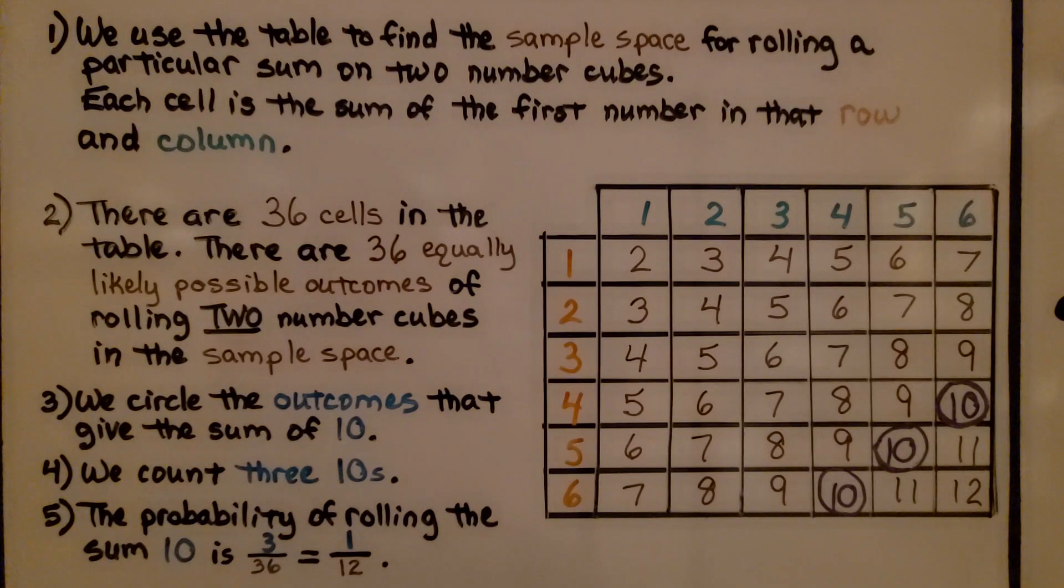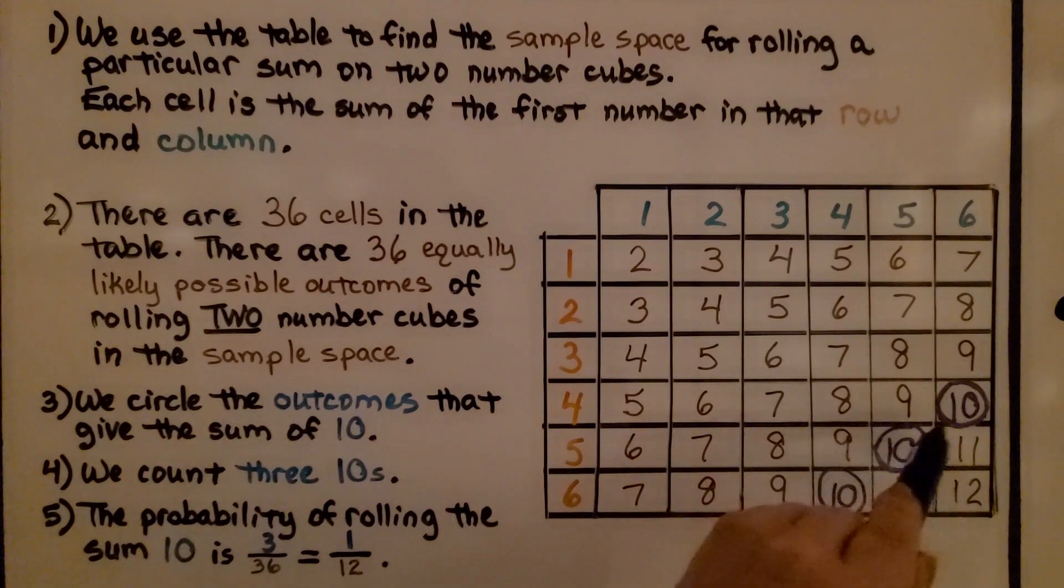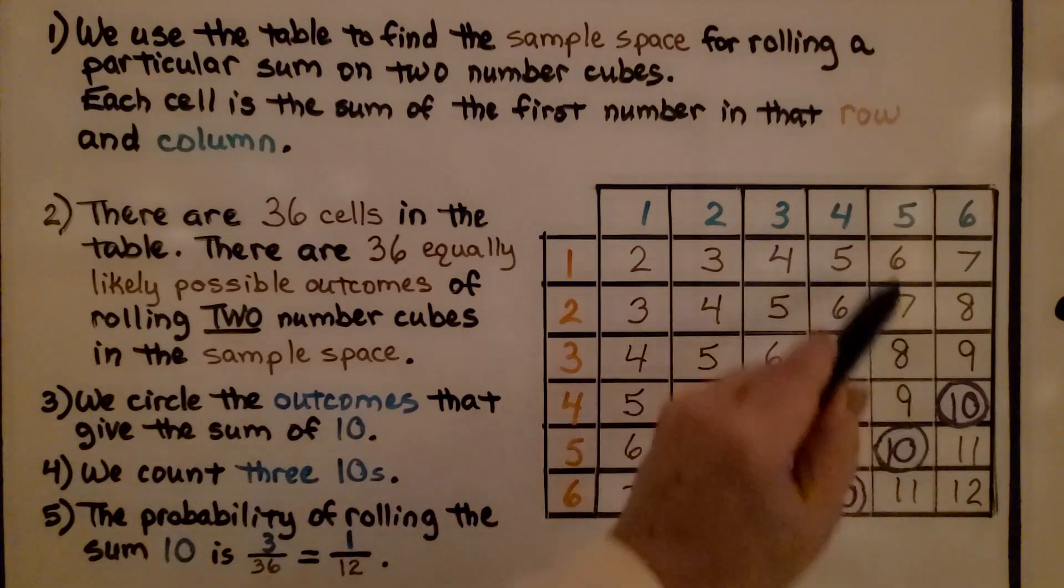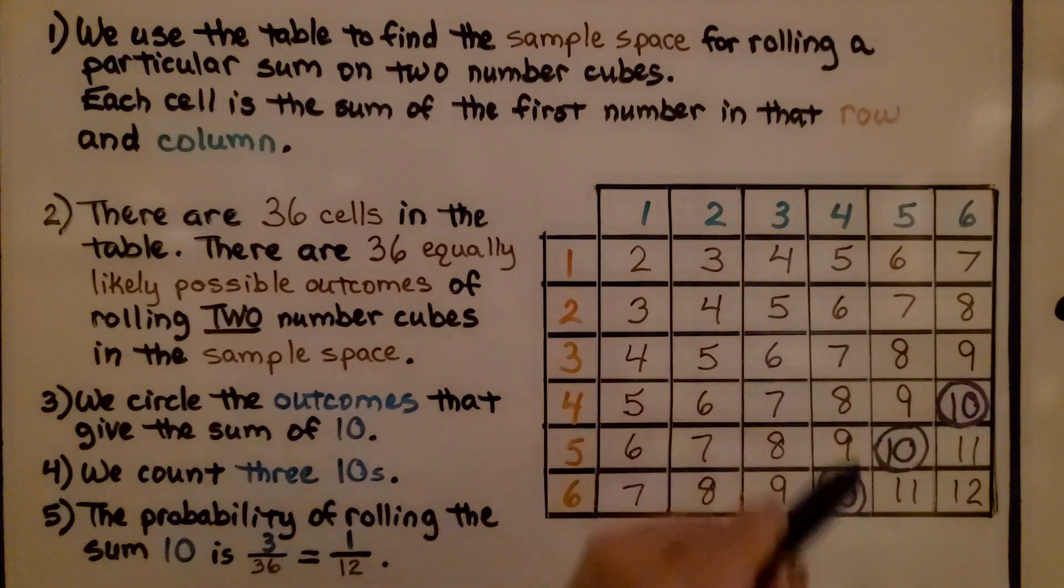We circle the outcomes that give the sum 10, because that's what we were trying to find. We've got a 10 here, here, and here, because we've got 4 plus 6, 5 plus 5, and 6 plus 4.